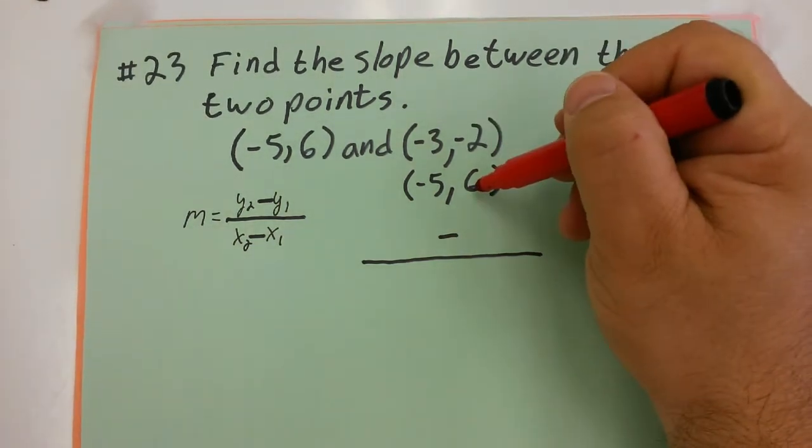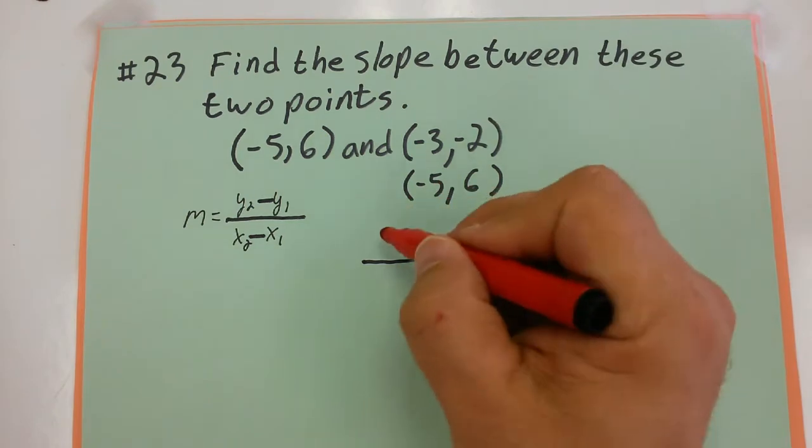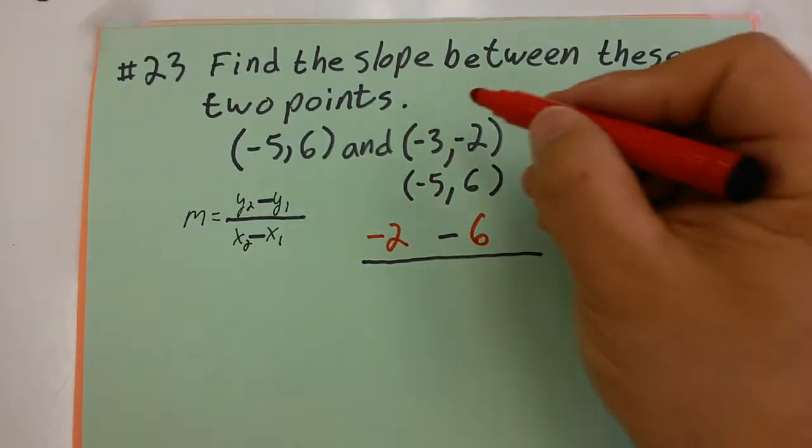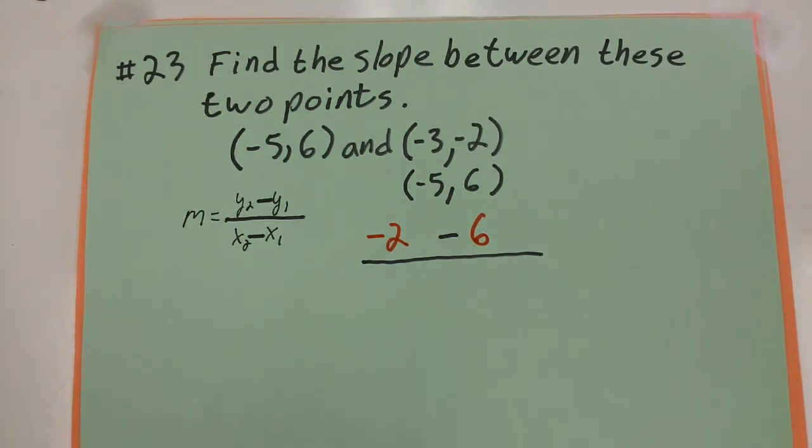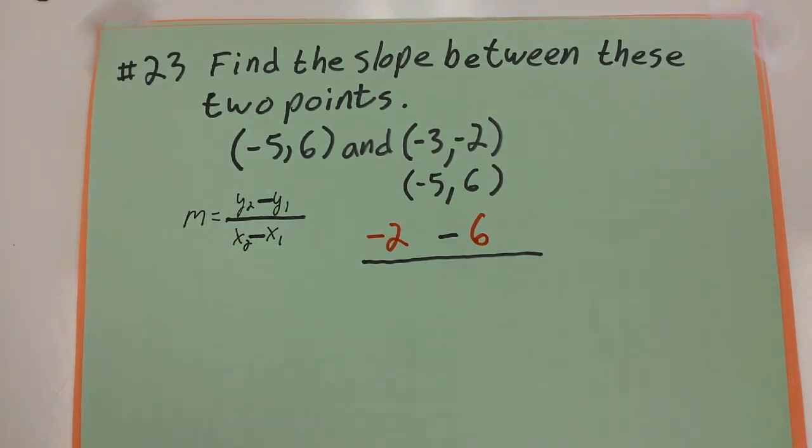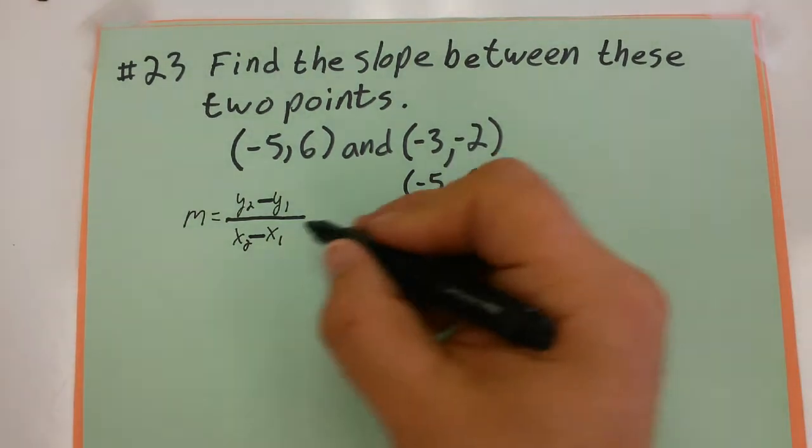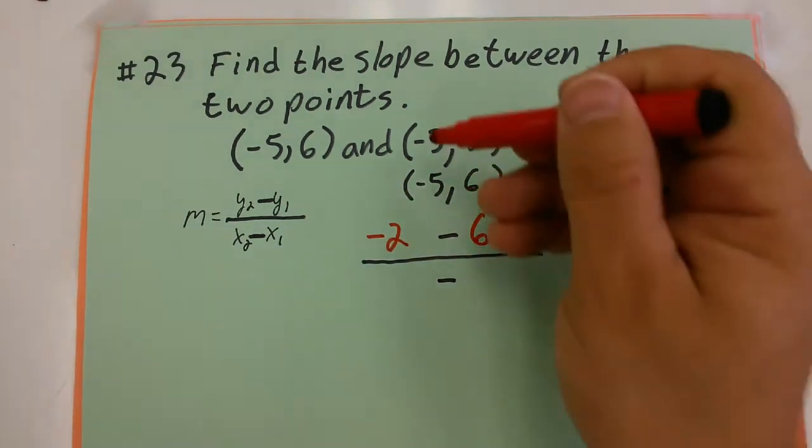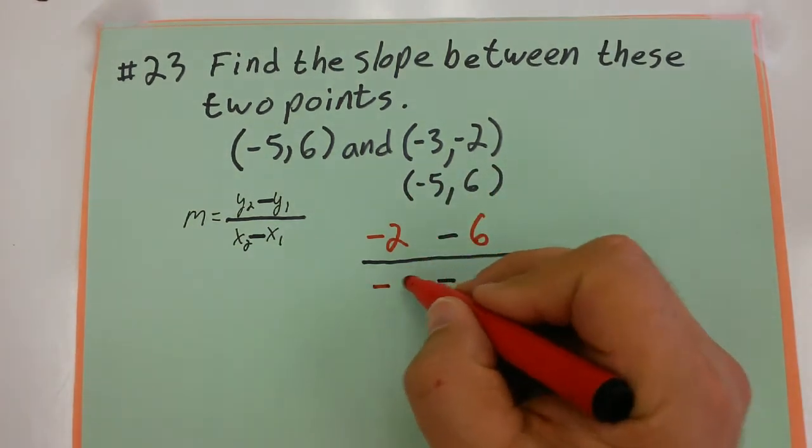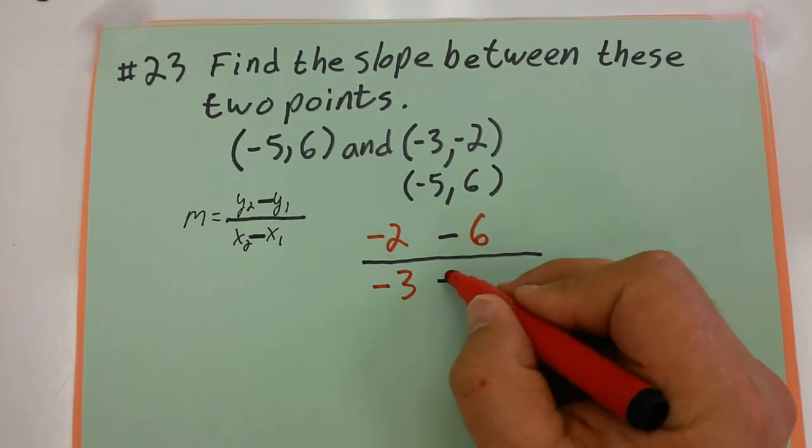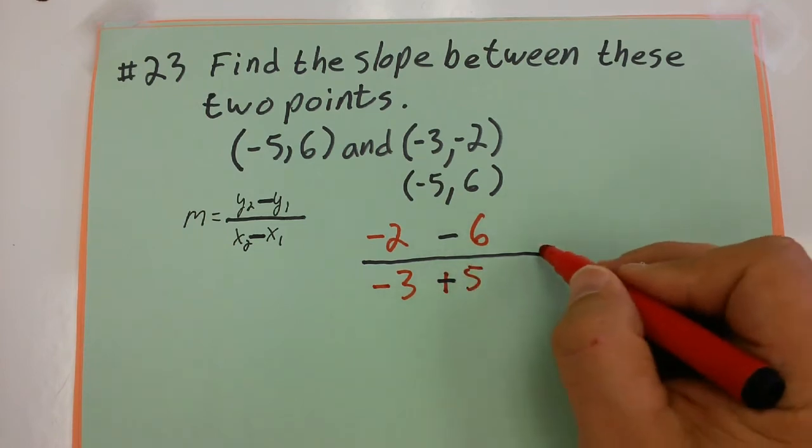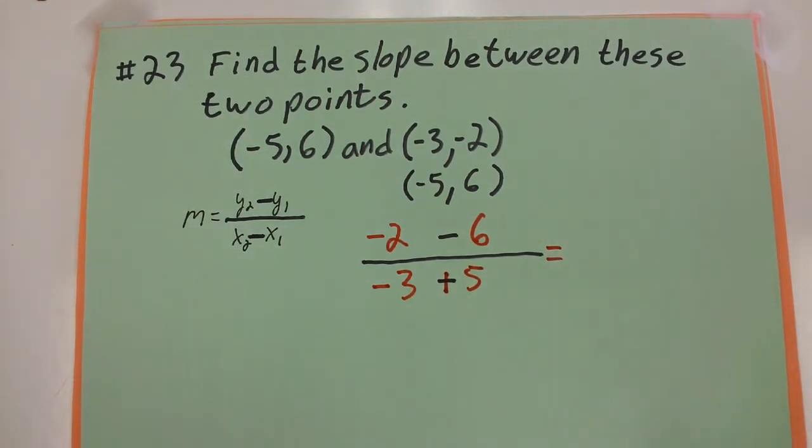My y sub 2 minus y sub 1 is negative 2 minus 6. And then my x sub 1 and x sub 2. Don't forget there's a minus on the bottom as well. So that's going to give me negative 3 minus 5. Now instead of putting a negative negative 5 here, I'll just change this to positive 5, just a little bit for convenience.